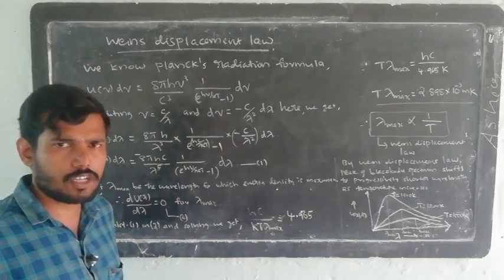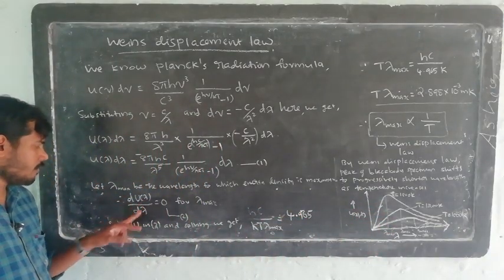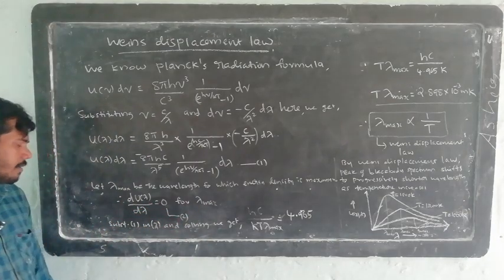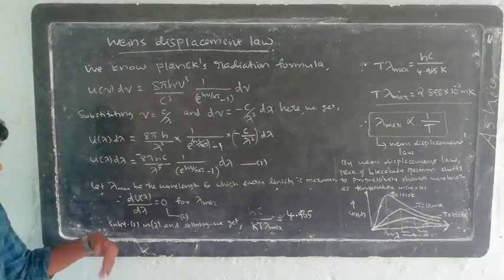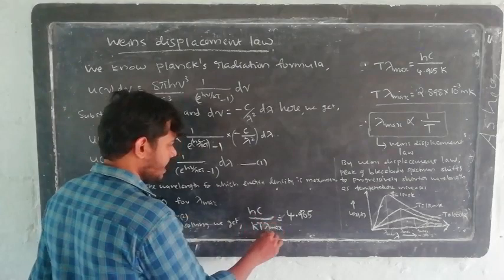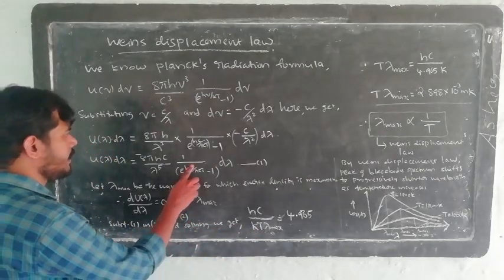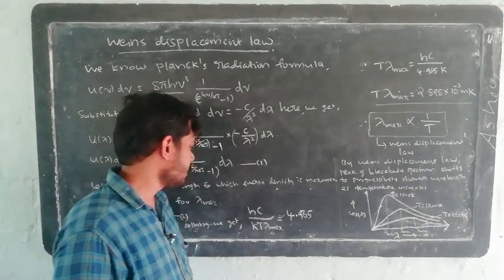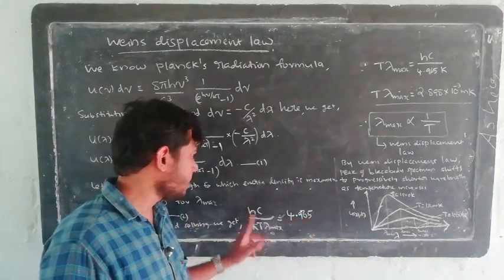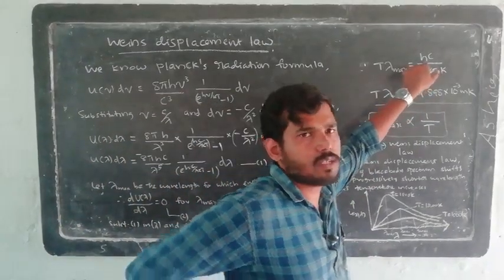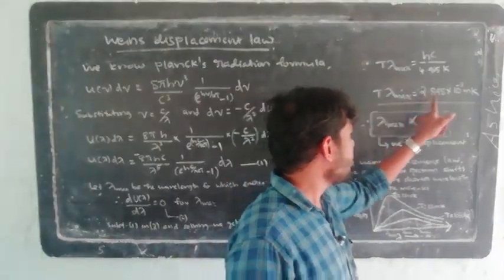To find Wien's displacement law, we differentiate u(λ)dλ with respect to λ and set it to zero to find the peak. At maximum, du(λ)/dλ = 0 at λ = λ_max. Substituting equations 1 and 2, and solving, we get: hc/(kT·λ_max) = 4.965, which gives T·λ_max = hc/(4.965·k). Substituting h, c, and k values: T·λ_max = 2.898 × 10⁻³ meter·Kelvin.